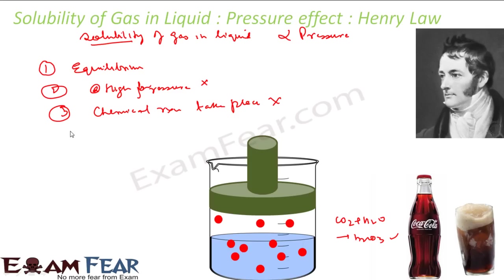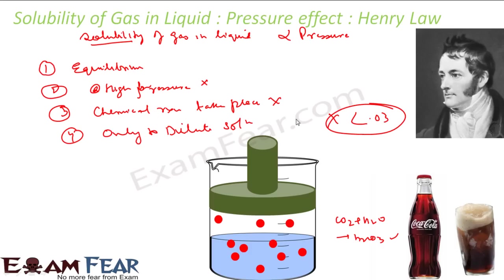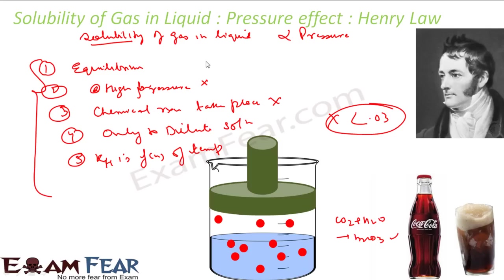Also, the KH value — Henry's constant — is a function of temperature. All these measurements must be done at a given temperature. Henry has proposed KH values for a good number of solvents, and they are temperature-dependent. So when KH is mentioned in numerical problems, the temperature will also be specified.